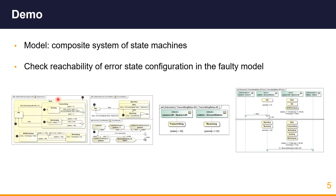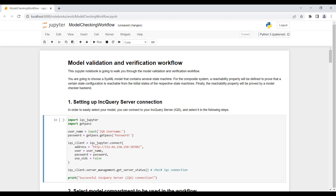In the next moments, we will see a demo of this workflow. We will check this reachability property on the spacecraft and ground station model and see the resulting execution trace transformed to a SysML sequence diagram. We will inspect this sequence diagram in a simulation tool.